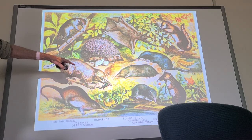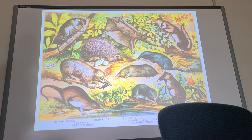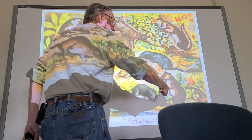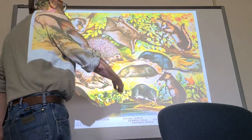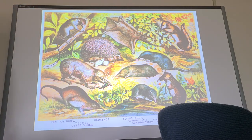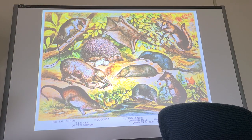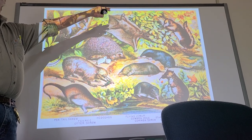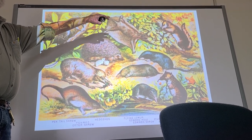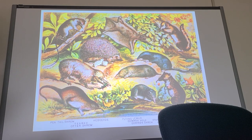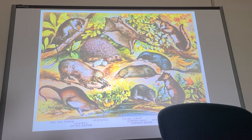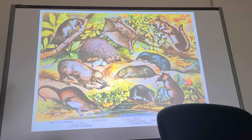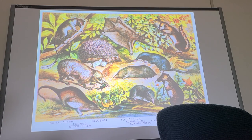In Order Insectivora, the tenrecs were included, as were shrews. There's a Macroscelideid here too. A flying lemur was in this group — which are not regular lemurs — and you also had hedgehogs. All these things were in this order called Insectivora.